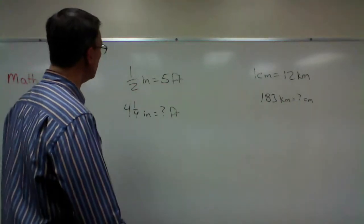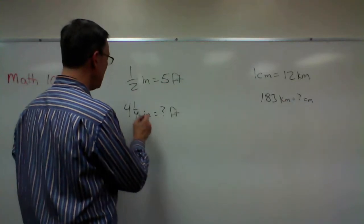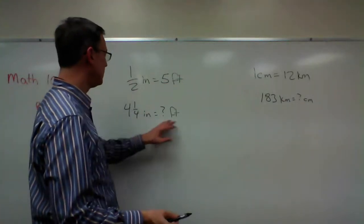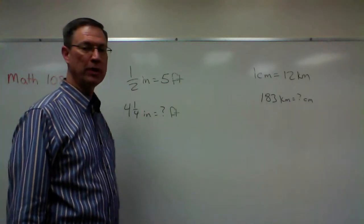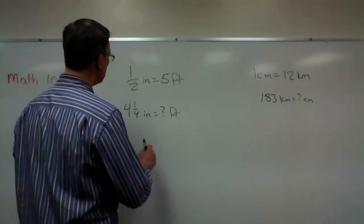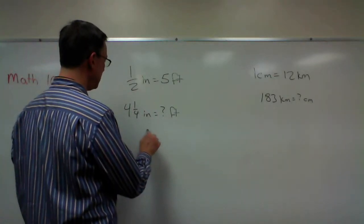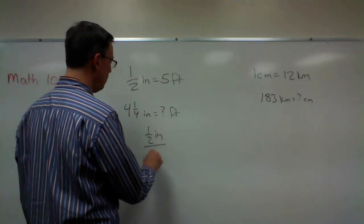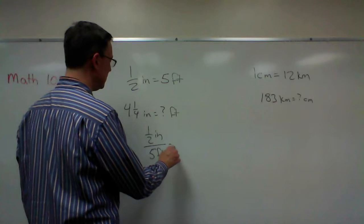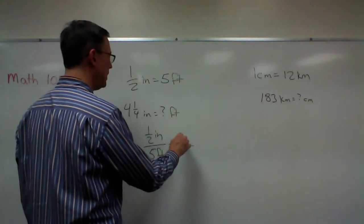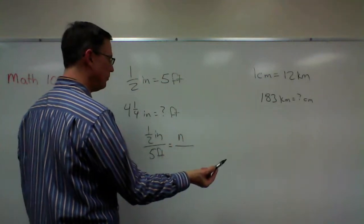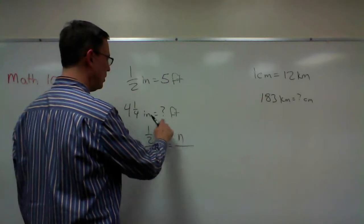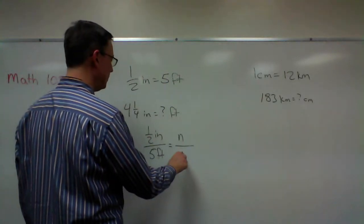We want to find out how many feet are in four and one-fourth inches. So let's first set it up this way and say one-half inch, put that over five feet, equals, and then we're going to say n for the number of feet because we don't know.